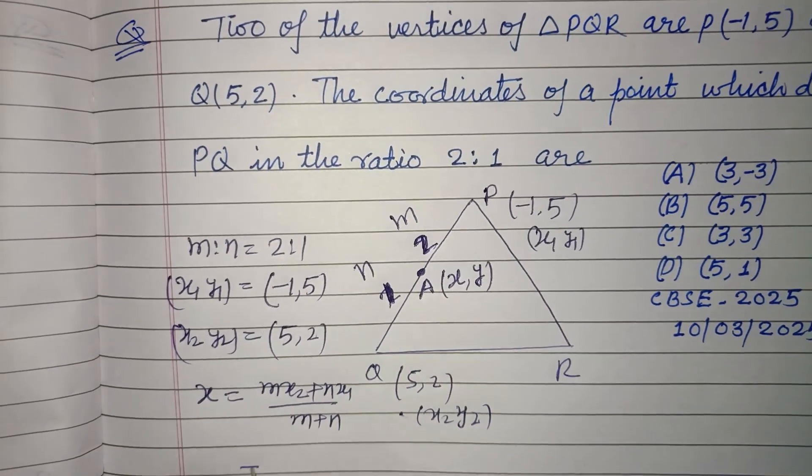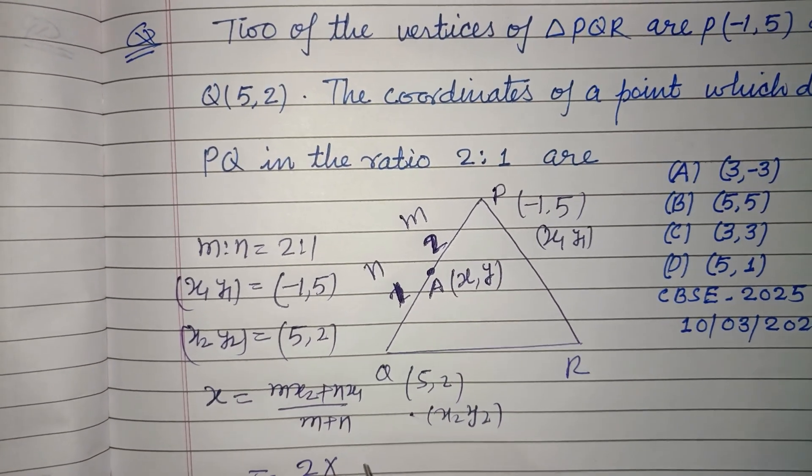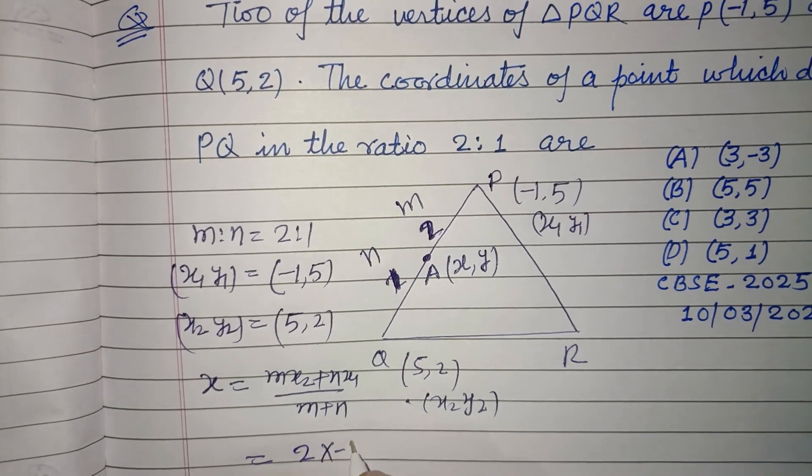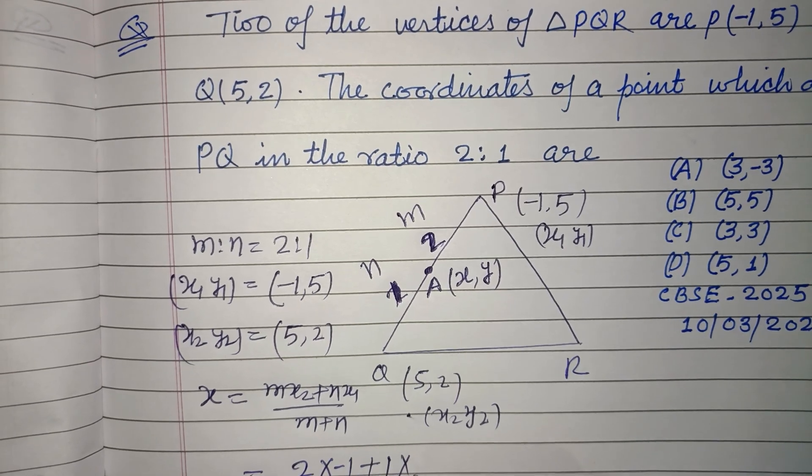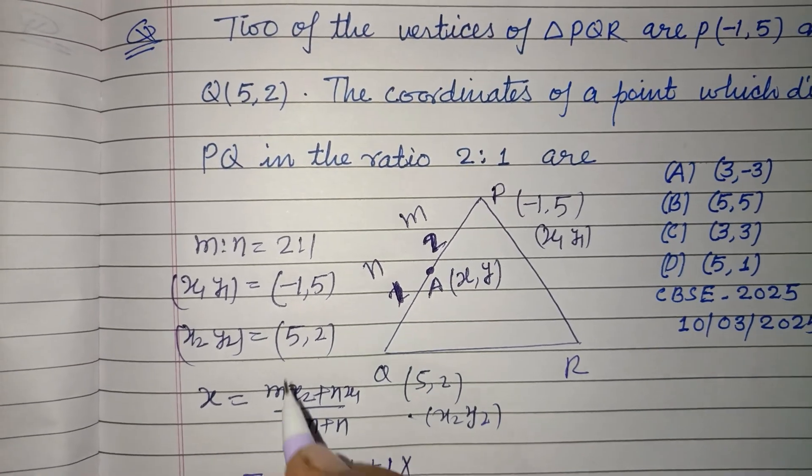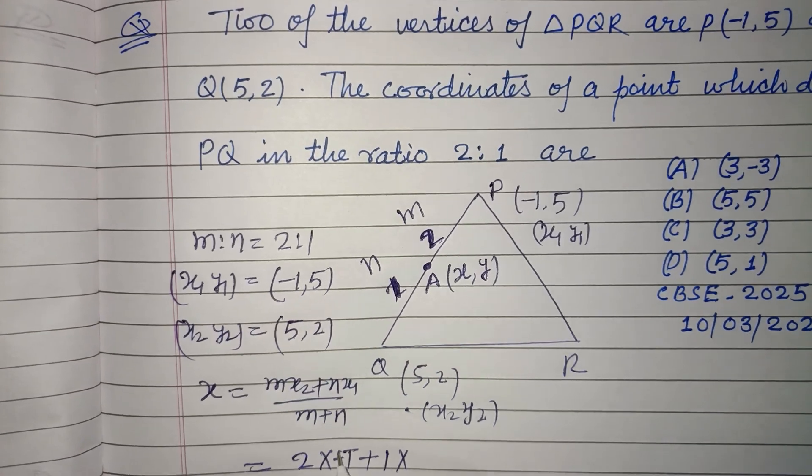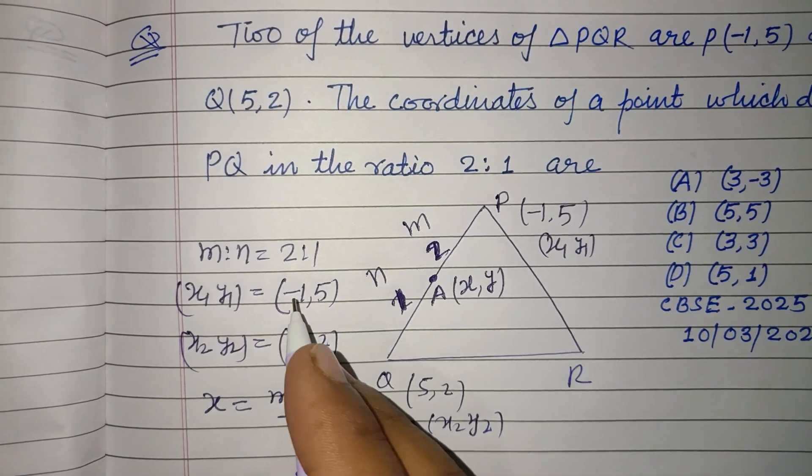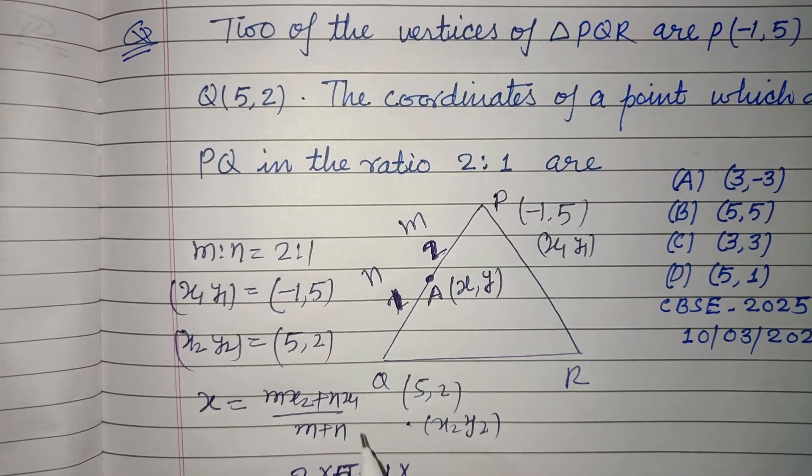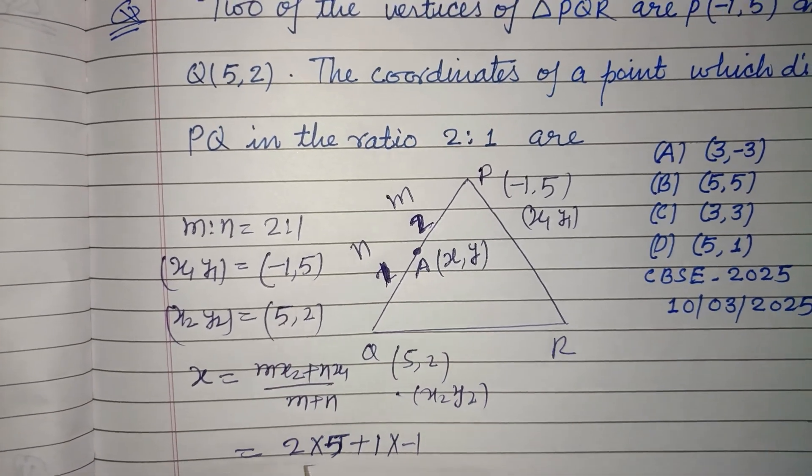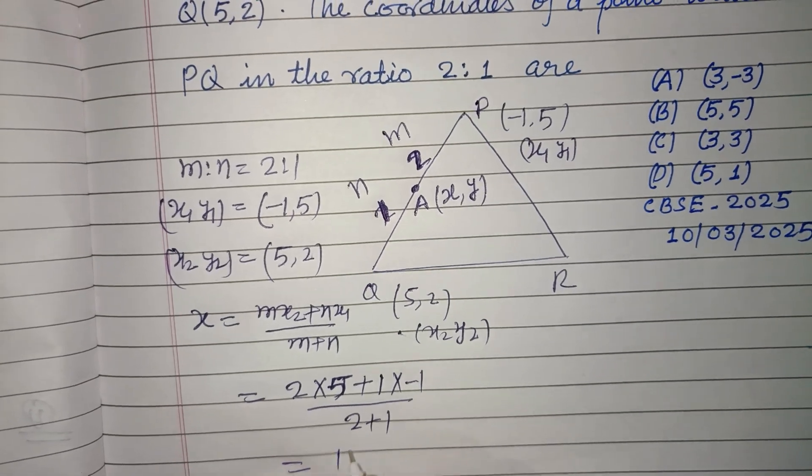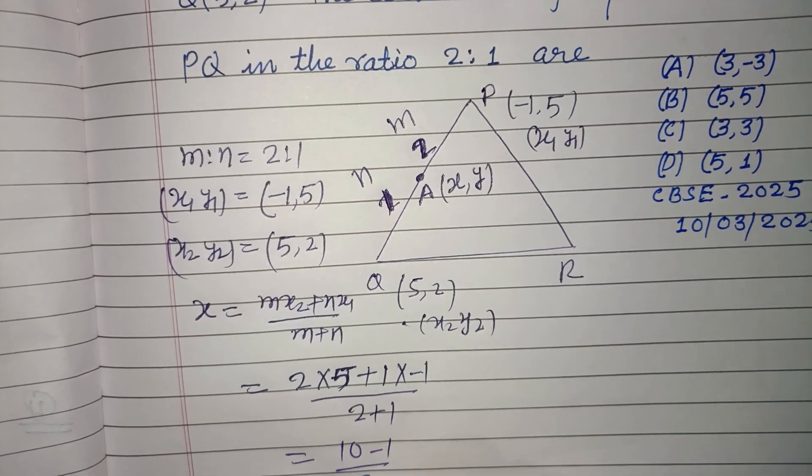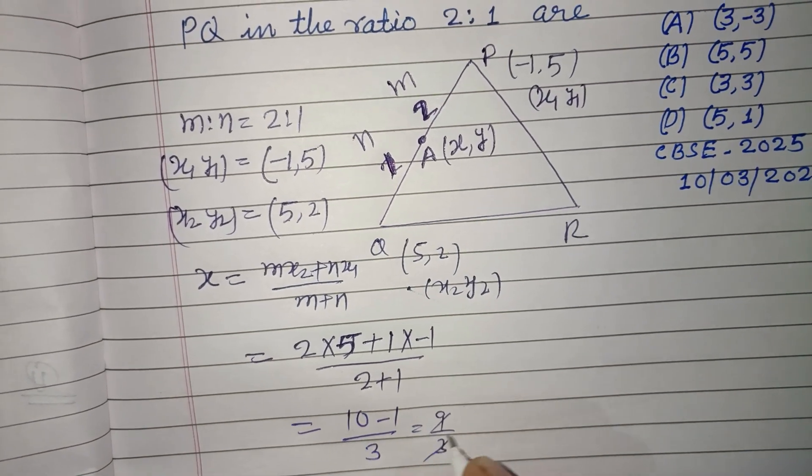So M is 2, X2 is 5, and X1 is (-1) over (M+N). So this is (10-1)/3, that is 9/3, so that's 3.